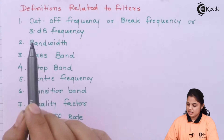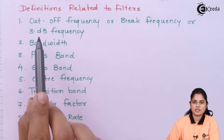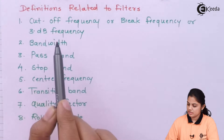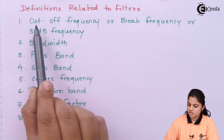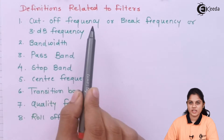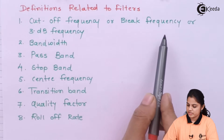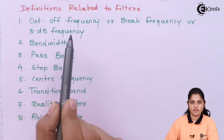First I will list out how many parameters there are to be considered, then we will learn one by one. The first one is cutoff frequency, also called break frequency or 3 dB frequency.